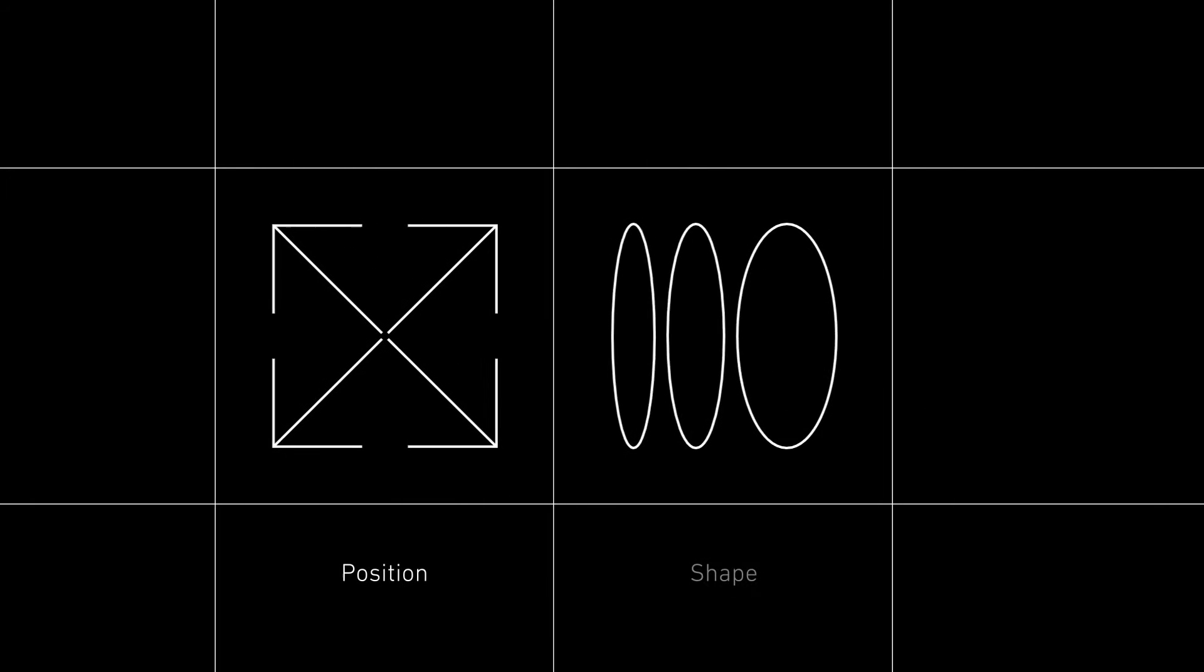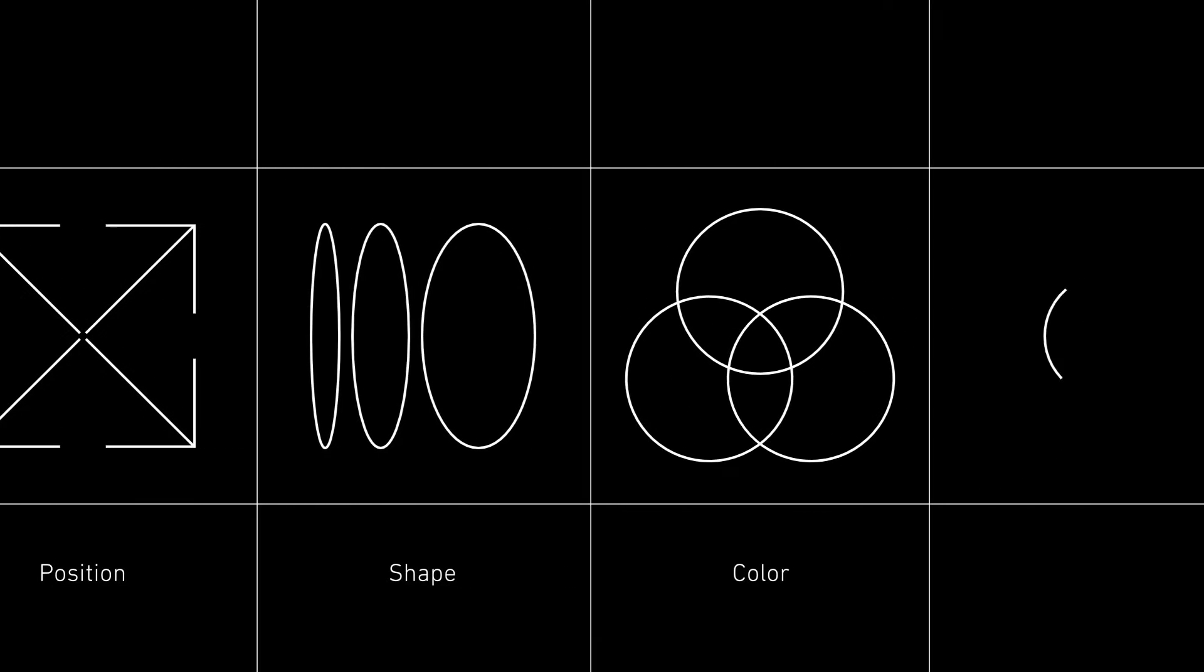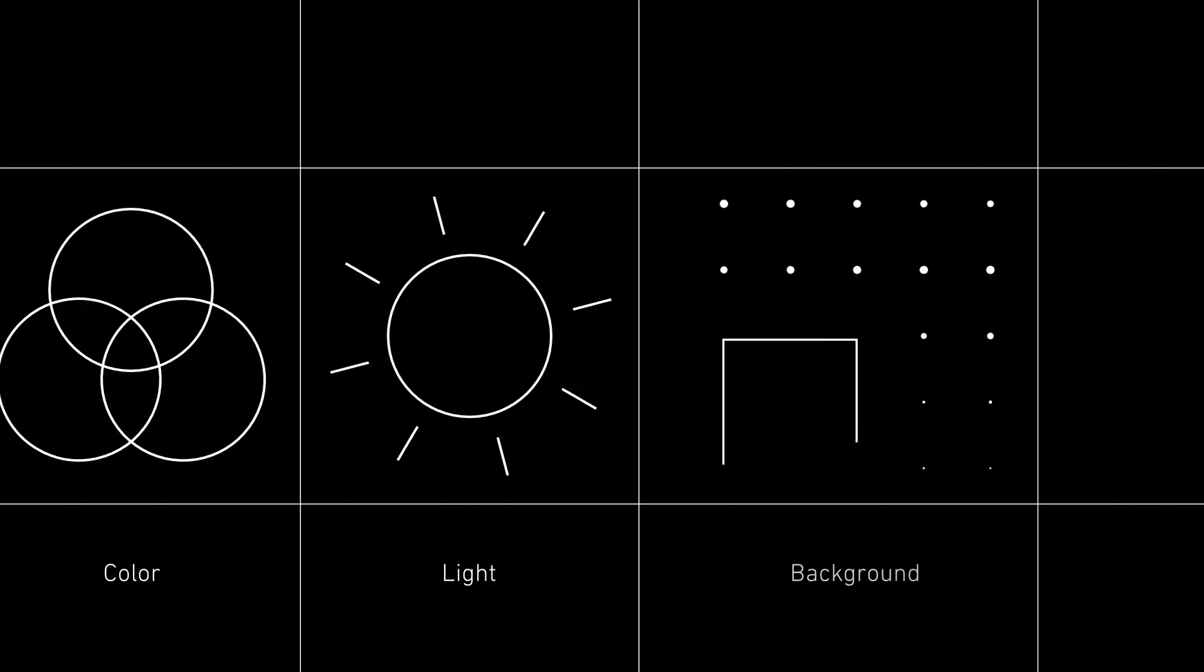Mirai enables robots to handle variants in position, shape, color, light, and background.